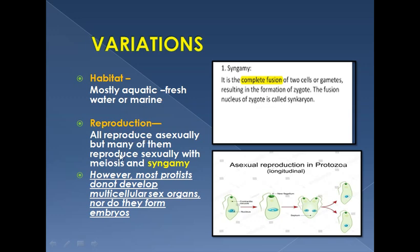All protists reproduce asexually, but many also reproduce sexually by meiosis and syngamy. Meiosis reduces the chromosome number to half in the daughter cells compared to the parent cell. Syngamy is the complete fusion of two cells or gametes resulting in the formation of a zygote, and the fused nucleus is called a synkaryon. Most protists do not develop multicellular sex organs, nor do they form embryos. Asexual reproduction in protozoa shows a flagellate dividing lengthwise into two daughter cells.